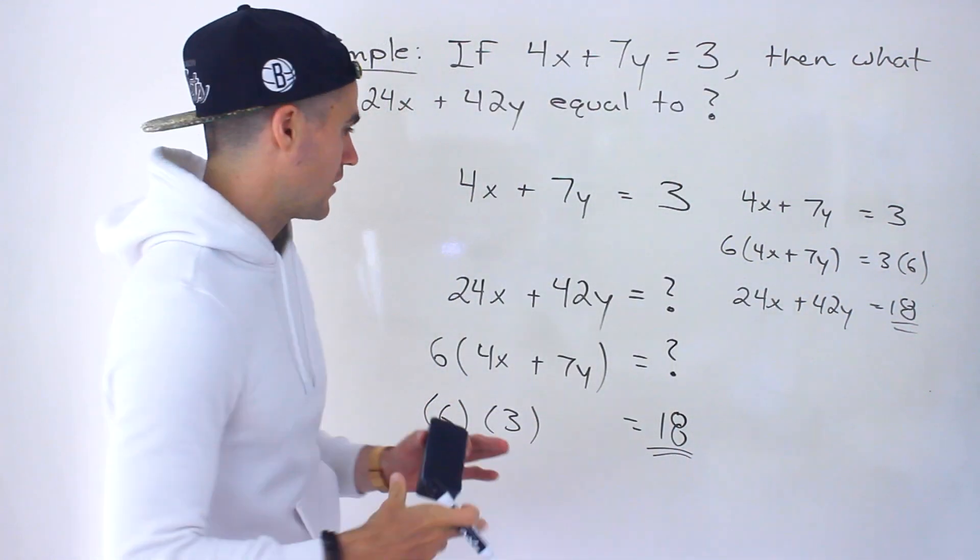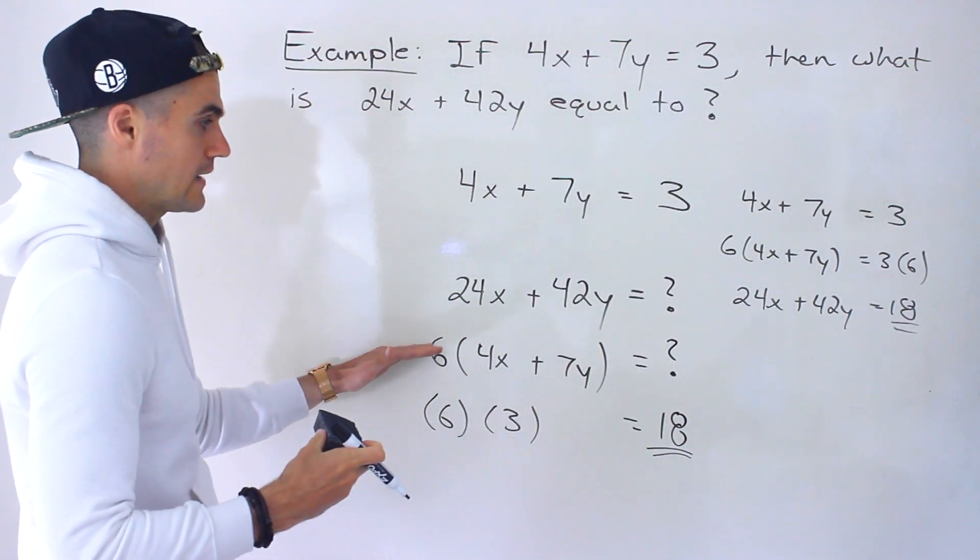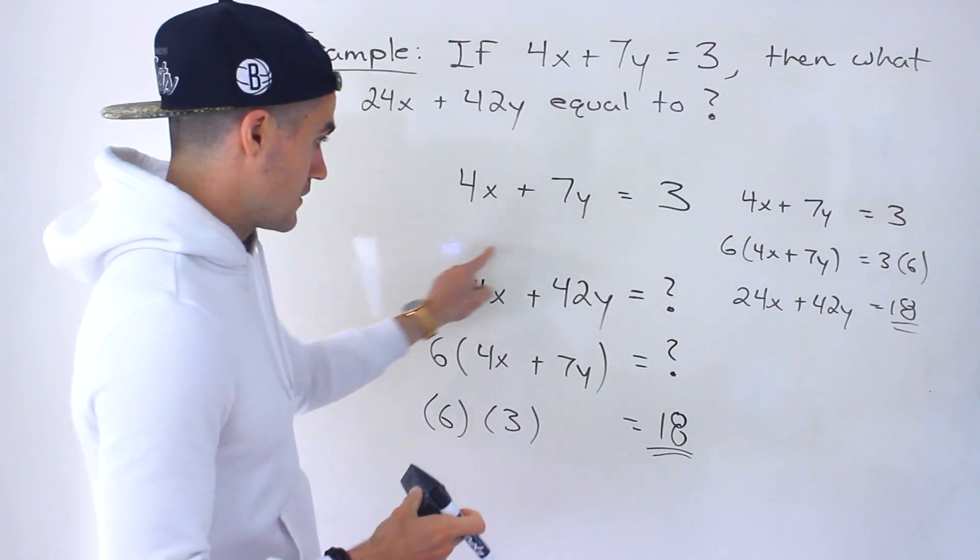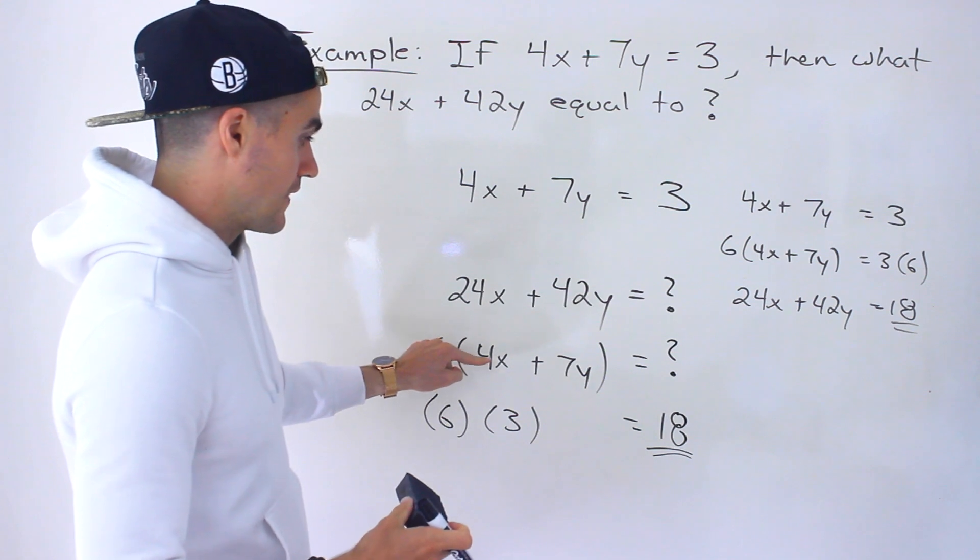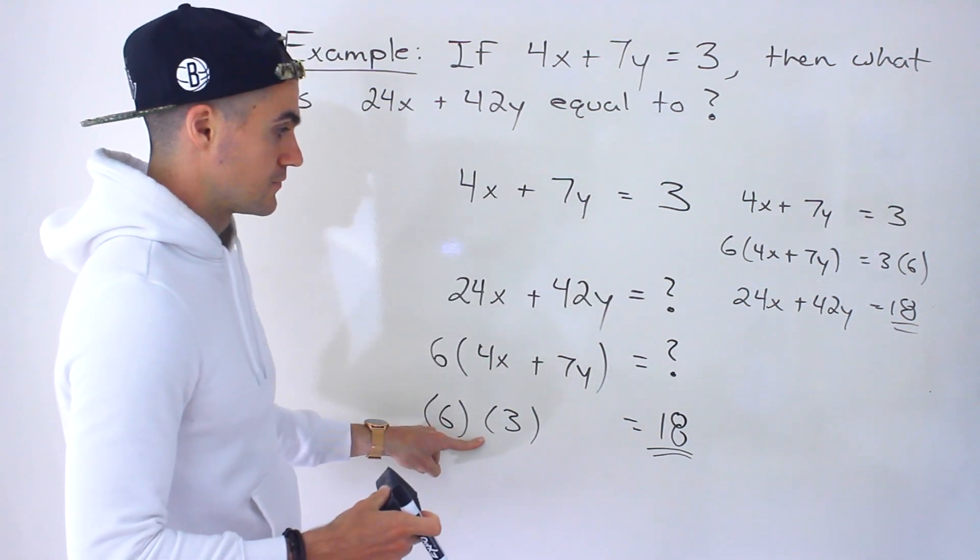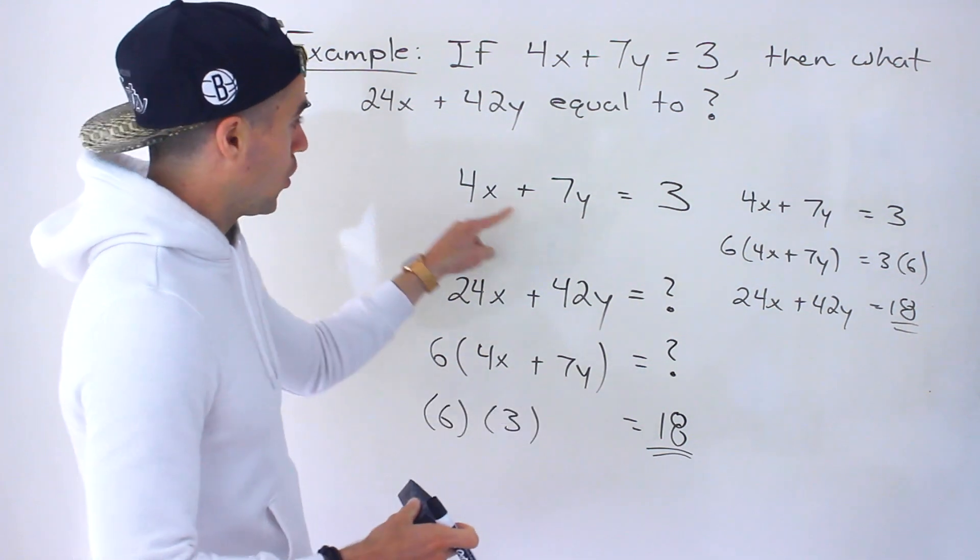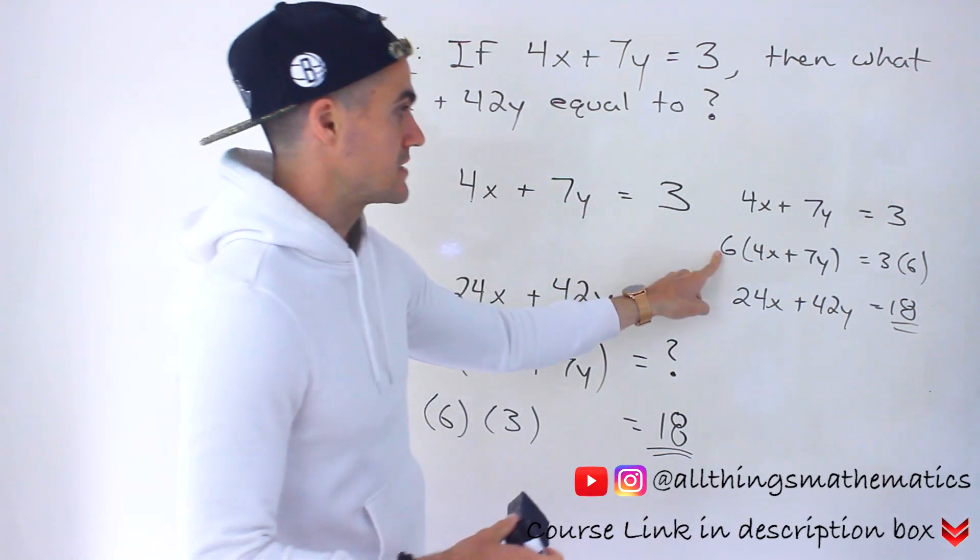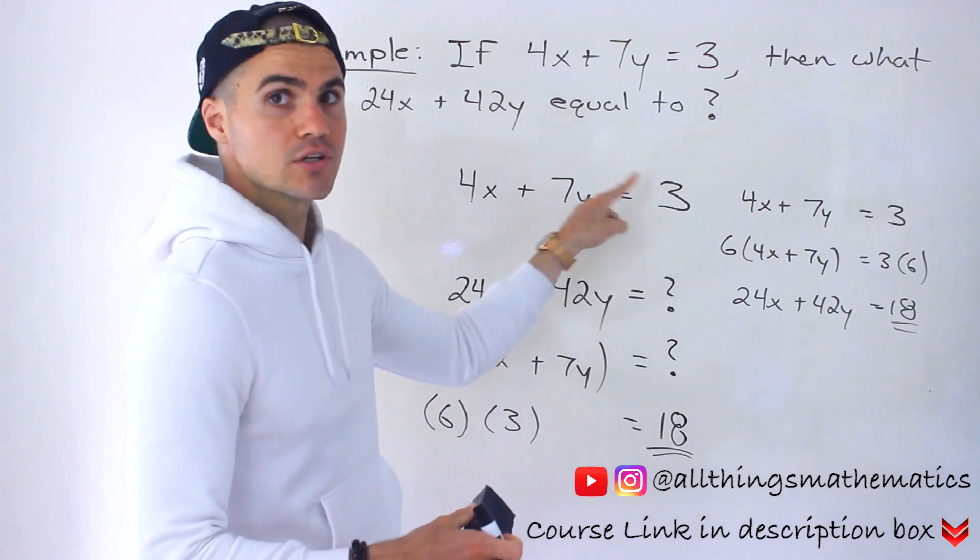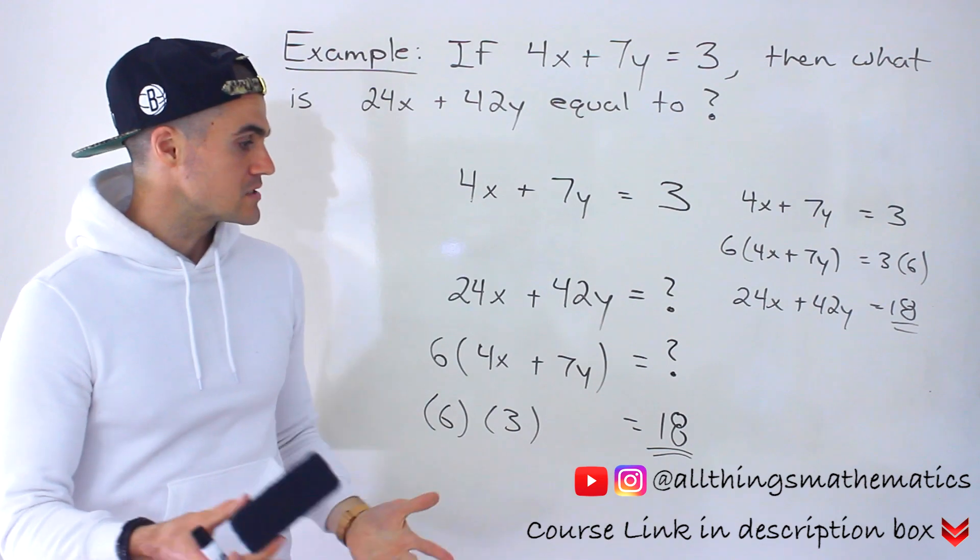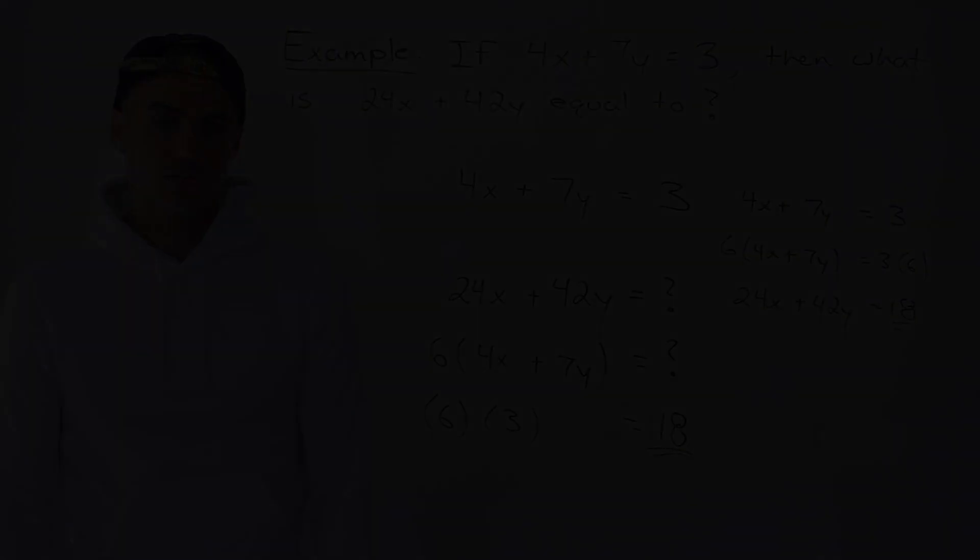Okay, so there's two ways to go about it. We could do it the factoring way like this. So we take this left side, factor it, and then we know 4x plus 7y is equal to 3. So then we could just sub in that, and we end up with 18. Or we could take this left side of this equation, multiply it by 6. What we do to one side of an equation, we got to do to the other, and we end up with 18. So multiple ways to do it, 18 is the final answer.